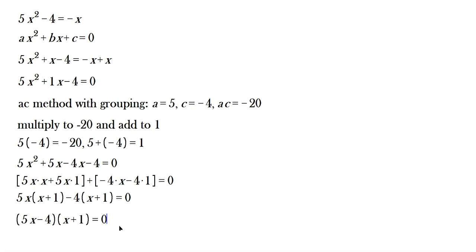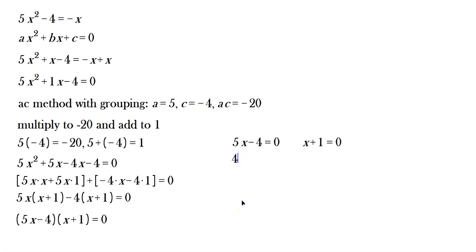Set each factor to 0: 5x minus 4 equals 0, or x plus 1 equals 0. For the first, add 4 to get 5x equals 4, then divide by 5: x equals 4 over 5. For the second, subtract 1: x equals negative 1. These are your two answers.